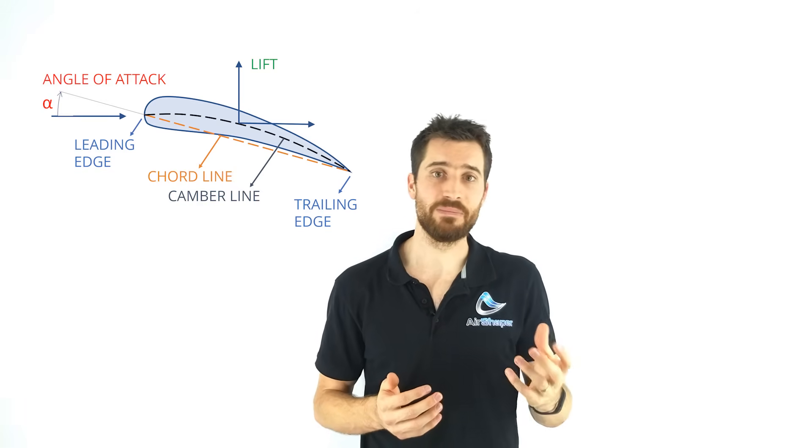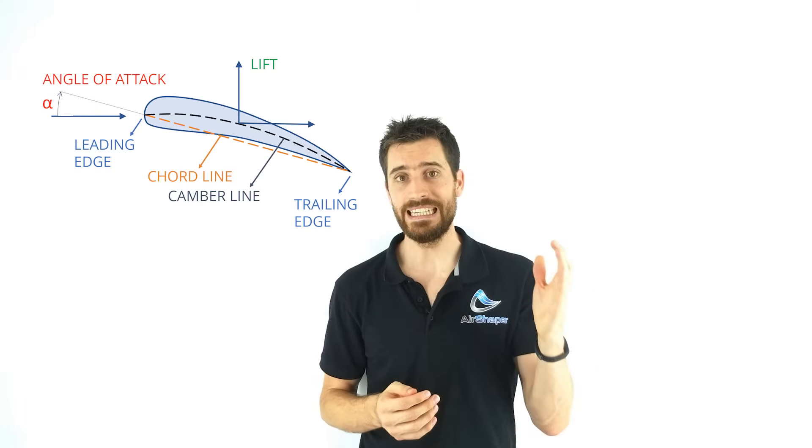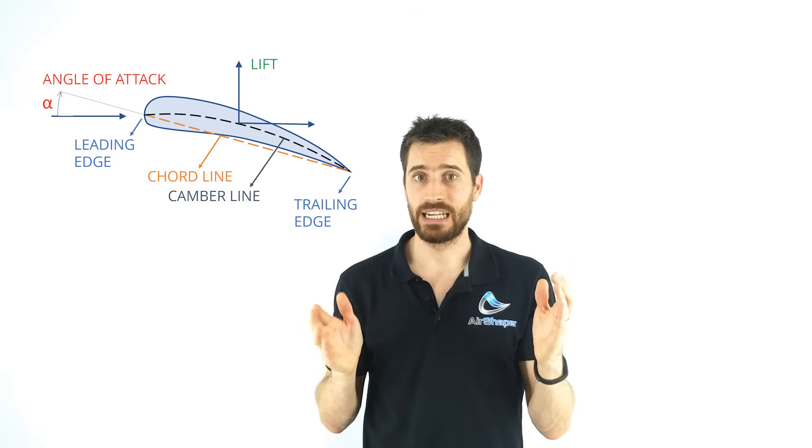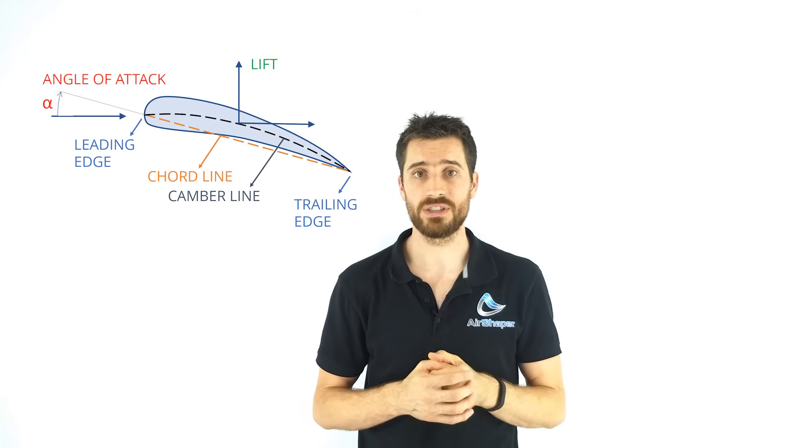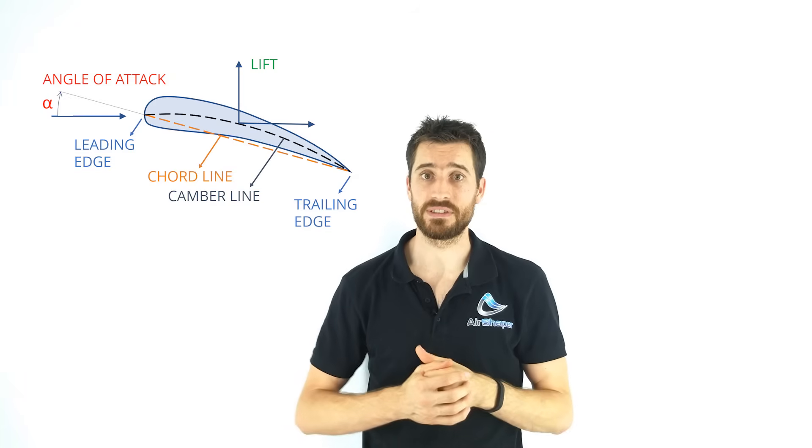Let's start by naming the basic parts of an airfoil. At the front you have the leading edge, and at the back you have the trailing edge. Both are connected via the upper surface, also called the suction surface, and the lower surface, also called the pressure surface.